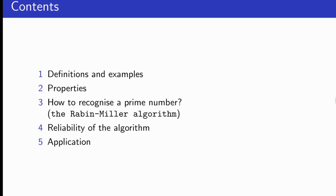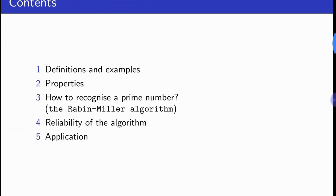The content of this video: today we are going to talk about the definition and some examples of prime numbers, their properties, how to recognize a prime number using the Rabin-Miller algorithm to check if a number is prime or not, the reliability of the algorithm, and then we end up studying one application of prime numbers.